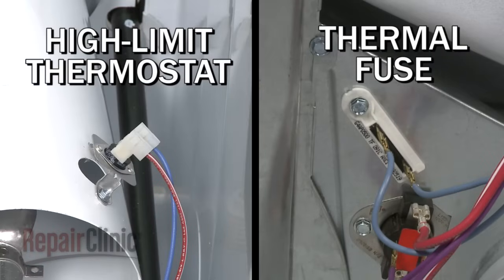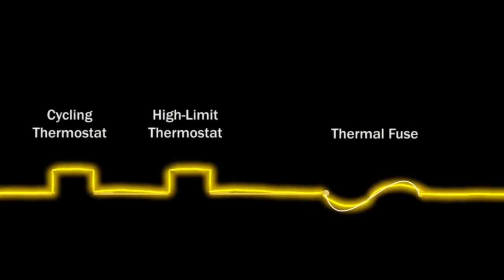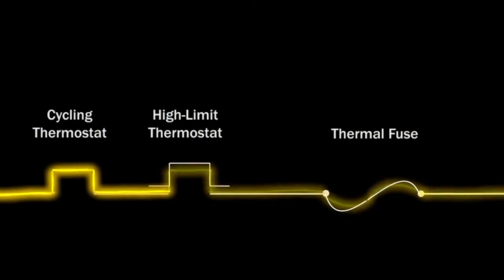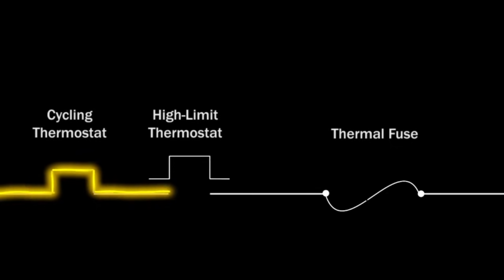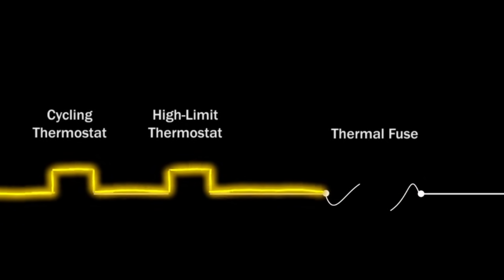The high-limit thermostat and thermal fuse also monitor the air temperature. Again, if there is an airflow problem, the high-limit thermostat may switch off the voltage to prevent damage to the dryer. Eventually, if the airflow problem is not corrected, the thermal fuse may fail and the dryer will not heat at all.